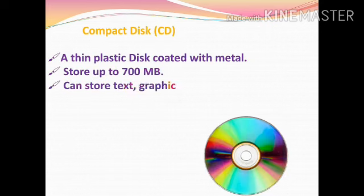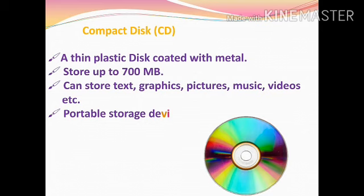The next storage device is compact disk or CD. It is a thin plastic disk coated with a metal. It is a high-capacity storage device that stores a large amount of information — up to 700 MB. A compact disk or CD can store text, graphics, pictures, music, videos, etc. It is also a portable storage device.